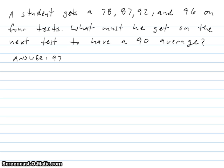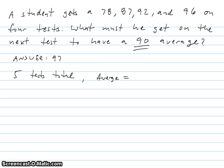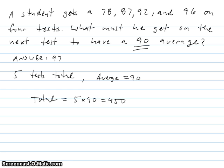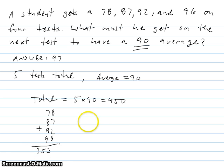The first thing I would do is observe that if they want a 90 average and there will be five tests total, the total of all five grades has to be 5 times 90, which is 450. Now that I know the total of the five numbers must be 450, and I know four of the five numbers, I add those up to get 353. Since they need to add up to 450, I subtract to get 97.